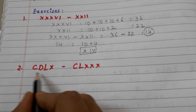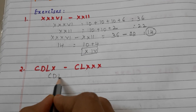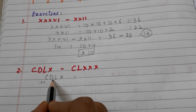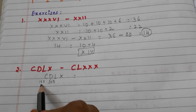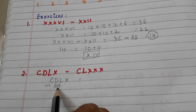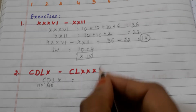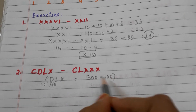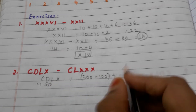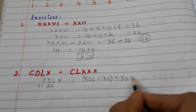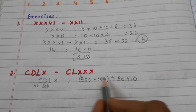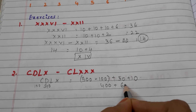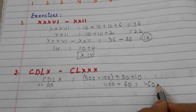Let us go to the second problem: CDLX minus CLXXX. First, take CDLX. C means 100 and D means 500. Here the smaller number comes first before the bigger number, so we subtract: 500 minus 100 equals 400. Plus L means 50, plus X means 10, giving us 460.